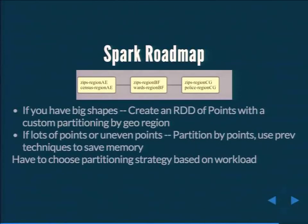Finally, taking this to frameworks like Spark with multiple parallel streaming instances: for a big batch job, you can think of two ways to partition — if you have a lot of big shapes, shard them by region as discussed. More commonly, you might have far more points than shapes, so partition by points and use the memory techniques described to fit all shapes onto every node, or some combination depending on your workload.